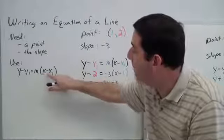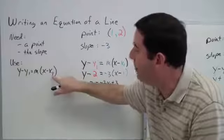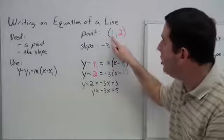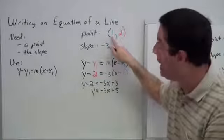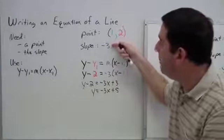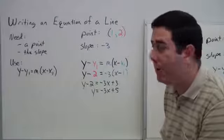And then x minus x sub 1, we'll put our x value there. For instance, on this problem, notice that the x value of our point I've put in green, and the y value in red with the slope in blue. You can tell from our formula where I'm planning to substitute things.